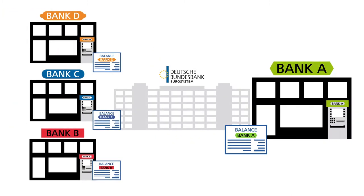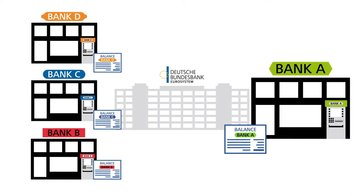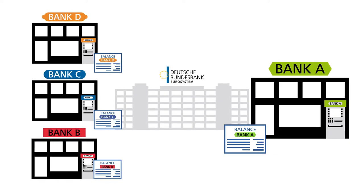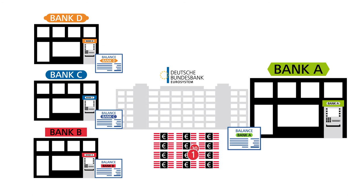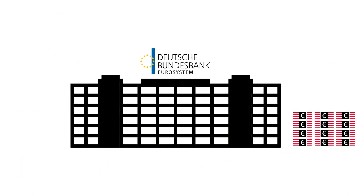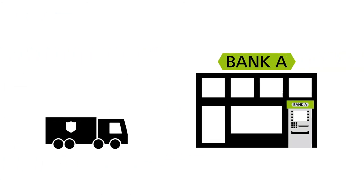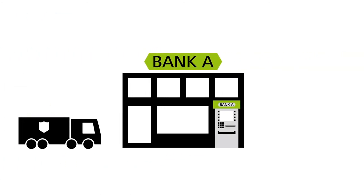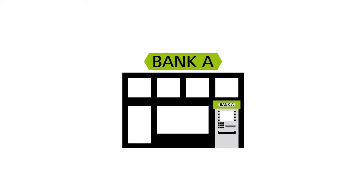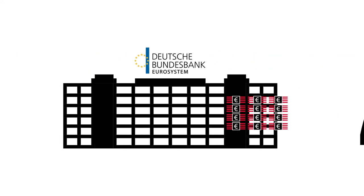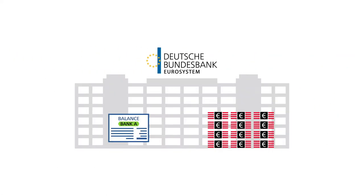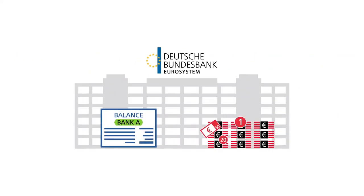Each commercial bank has an account at the central bank and is able to withdraw cash from this account, which lowers the account's balance. Cash-in-transit companies transport the euro banknotes and coins from the Bundesbank to the commercial bank in armored vehicles. The commercial bank's account balance at the central bank increases whenever it makes cash deposits at the central bank.